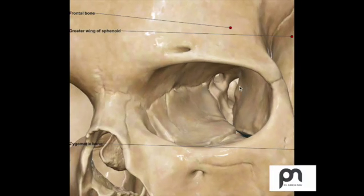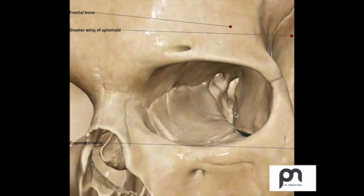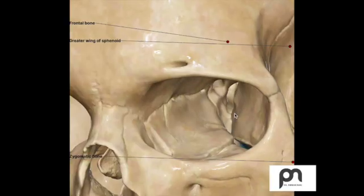These elongated clefts are the fissures. This is the superior orbital fissure and that's the inferior. This is inferior in the orbit, that's why it's called inferior. And this is going upwards, that's superior.